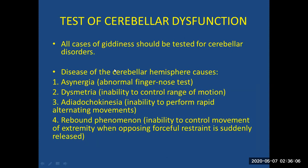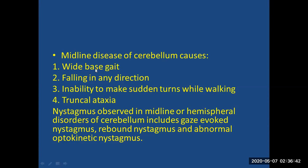Tests for cerebellar dysfunction: All cases of dizziness should be tested for cerebellar disorders. Diseases of the cerebellar hemispheres can cause asynergia (abnormal finger-nose test), dysmetria (inability to control range of motion), dysdiadochokinesia (inability to perform rapid alternating movements), and rebound phenomenon (inability to control extremity movement when forceful restraint is suddenly released). Midline cerebellar disease causes wide-based gait, falling tendency in any direction, inability to make sudden turns while walking, and truncal ataxia. Nystagmus observed in midline or hemispheral cerebellar disorders includes gaze-evoked nystagmus, rebound nystagmus, and abnormal optokinetic nystagmus.